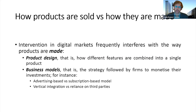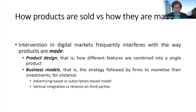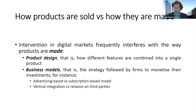In digital markets, very often intervention goes beyond the way in which products are sold and gets into the way products are made. This means second-guessing or interfering with the design of products — that is to say, with the way in which different features are integrated into a single complex product. Intervention may also interfere with the very business model of a company, or at least the core of a business model, and in particular with the models that companies follow to monetize their investments.